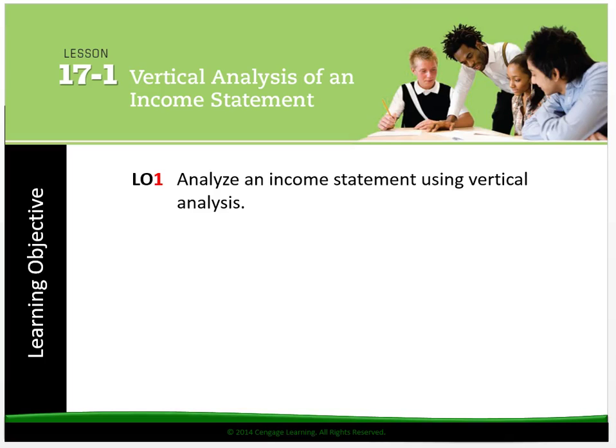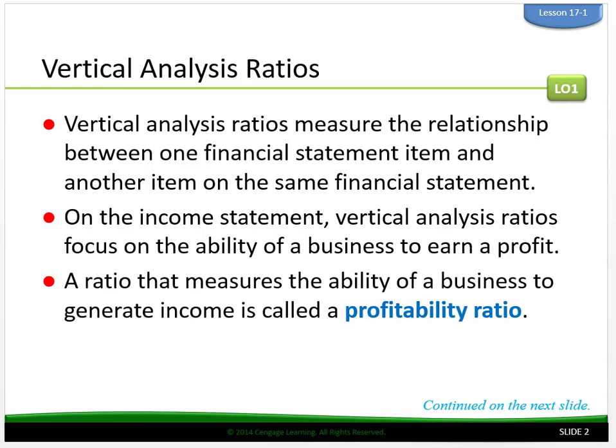17.1 vertical analysis of an income statement. Vertical analysis ratios measure the relationship between one financial statement item and another item on the same financial statement — it's vertical, up and down. On the income statement, vertical analysis ratios focus on the ability of a business to earn a profit. A ratio that measures the ability of a business to generate income is called a profitability ratio. The vertical analysis ratios on an income statement are examples of profitability ratios.